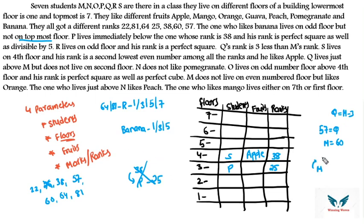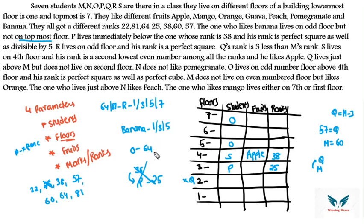Q does not live on the second floor. N does not like pomegranate — negative statement, we'll eliminate by possibility cases. O lives on an odd floor above the fourth floor, so O is on floor 5 or 7. O's rank is a perfect square as well as a perfect cube — 64 satisfies this since 64 = 8² = 4³. So O's rank is 64, and 38 is already assigned to S.